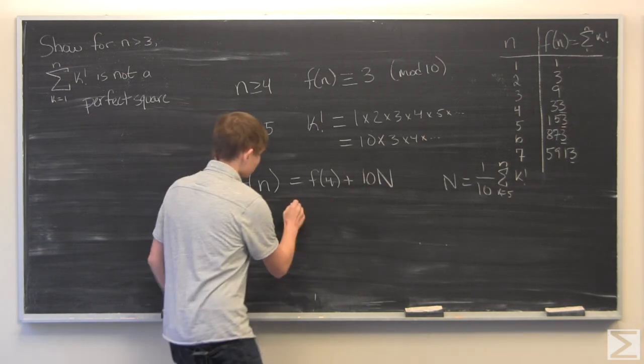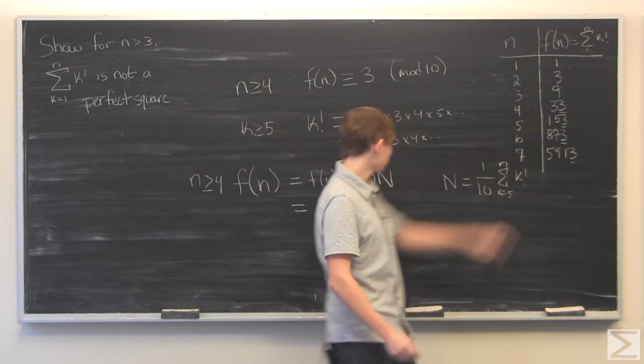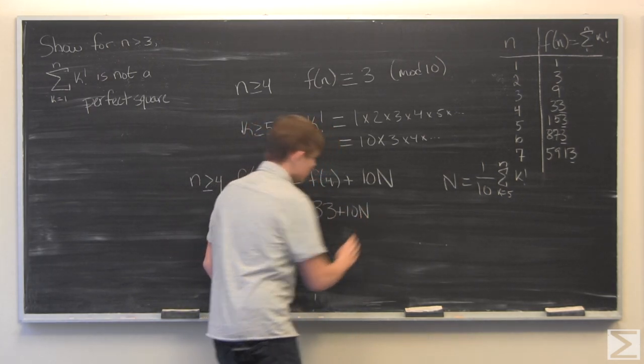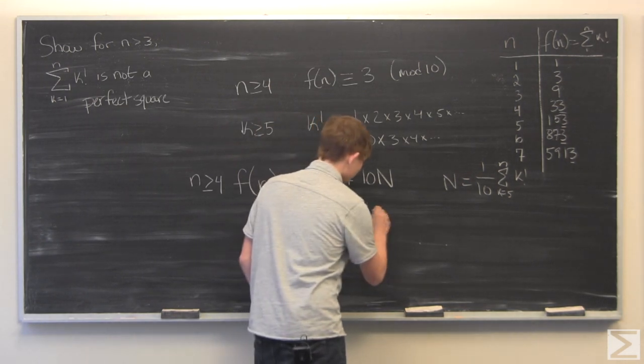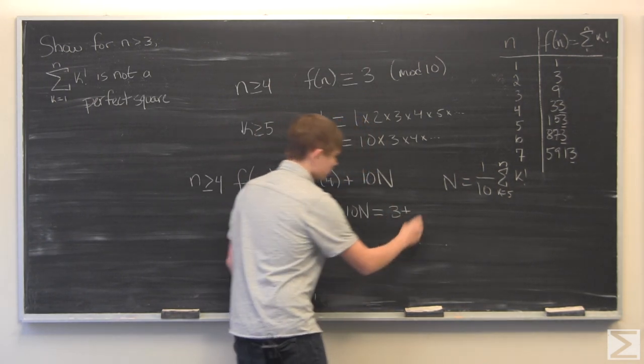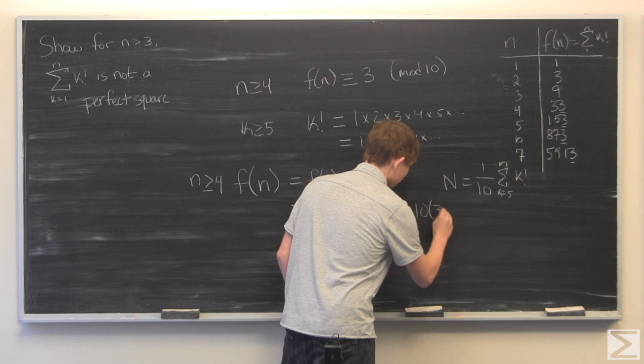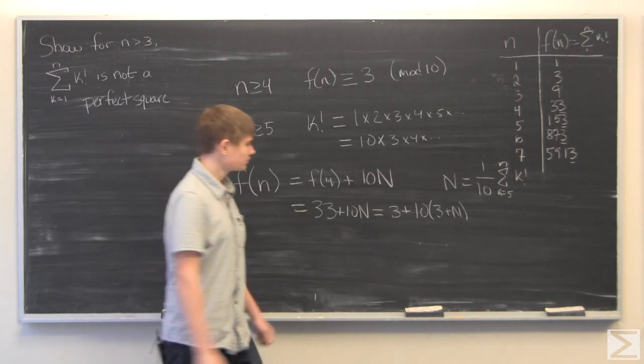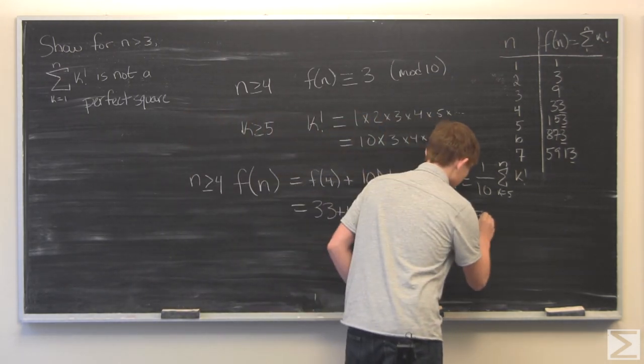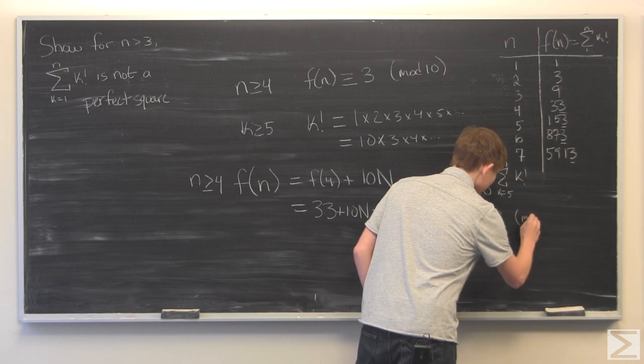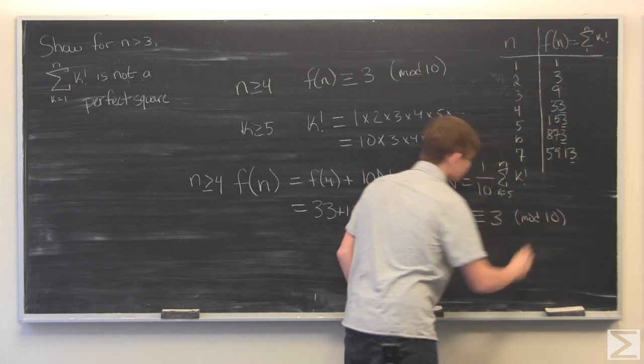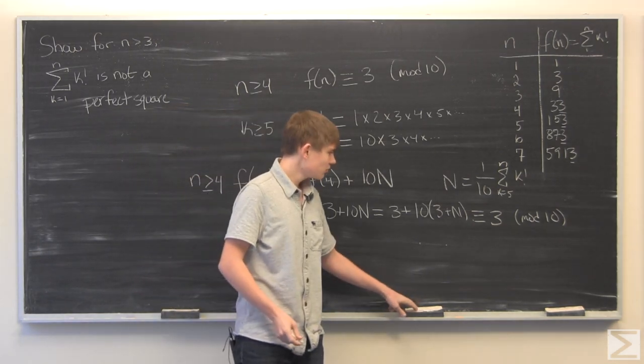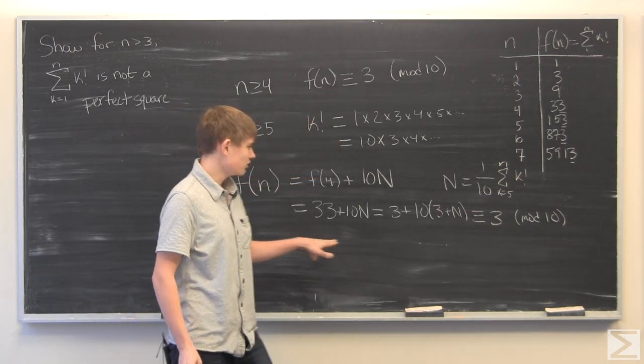Therefore we can rewrite this for f of 4 we have 33 so this is going to be 33 plus 10 times n and we can rewrite this as 3 plus 10 times (3 plus n) which is congruent to 3 mod 10. Now since that we know this what we can do is check to see if 3 is a quadratic residue mod 10.